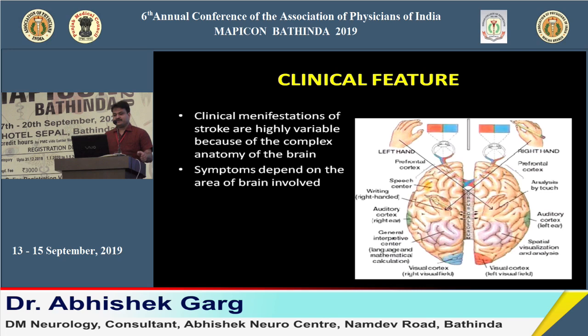Regarding clinical features, all body functions are controlled by the brain, with each function controlled by a specific area. Vision is controlled by the visual cortex, hearing by the auditory cortex in the temporal lobe, and motor power by the motor area in the frontal lobe. Symptoms of stroke depend upon which area of the brain is affected.